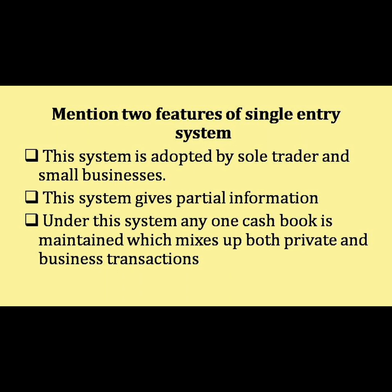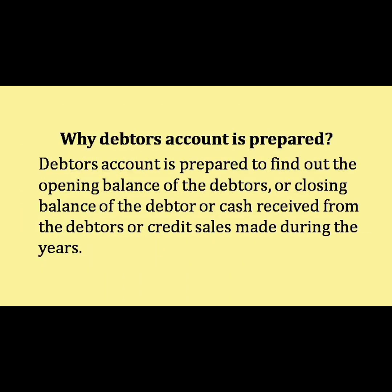Mention two features of single entry system. This system is adopted by sole traders and small businesses. This system gives partial information. Under this system, any one cash book is maintained, which mixes up both private and business transactions. Why is debtor's account prepared? Debtor's account is prepared to find out the opening balance of debtors, closing balance of debtors, cash received from debtors, or credit sales made during the year.